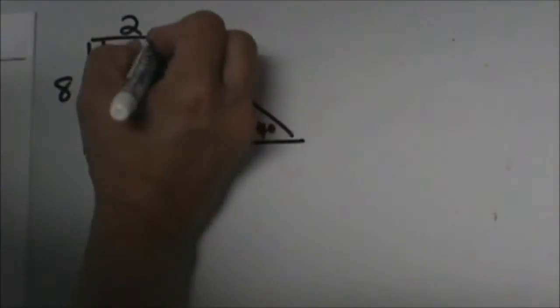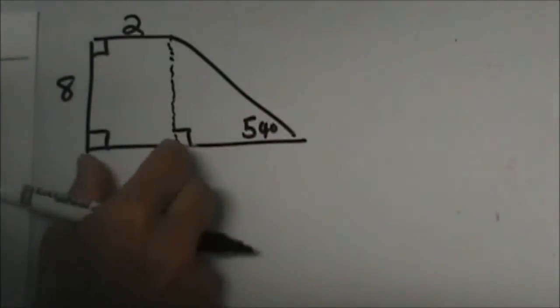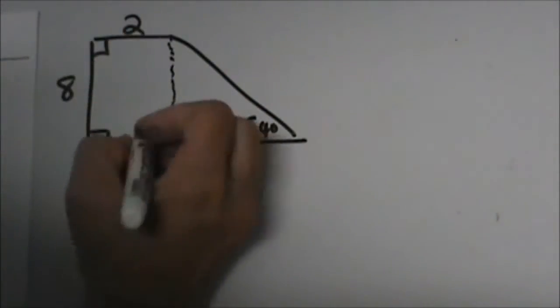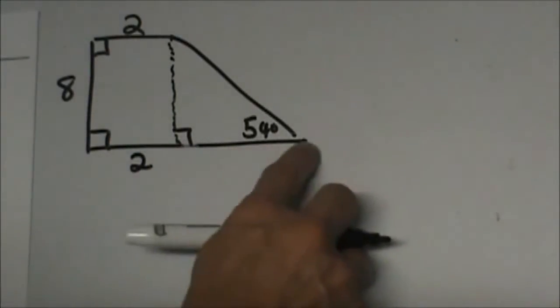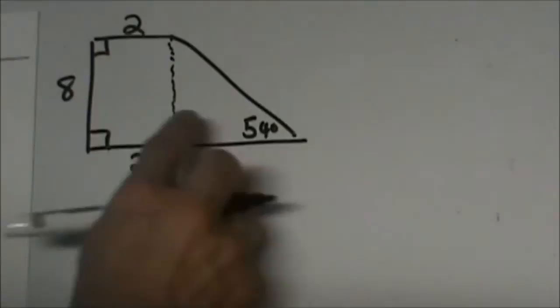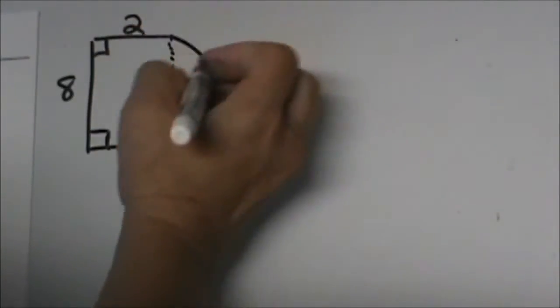I'm going to make this into a rectangle on the left. If I draw that in, what do I know this measurement is here? What is that measurement? That measurement is 2. I don't know this measurement, do I? But I do know that this height has got to be 8.